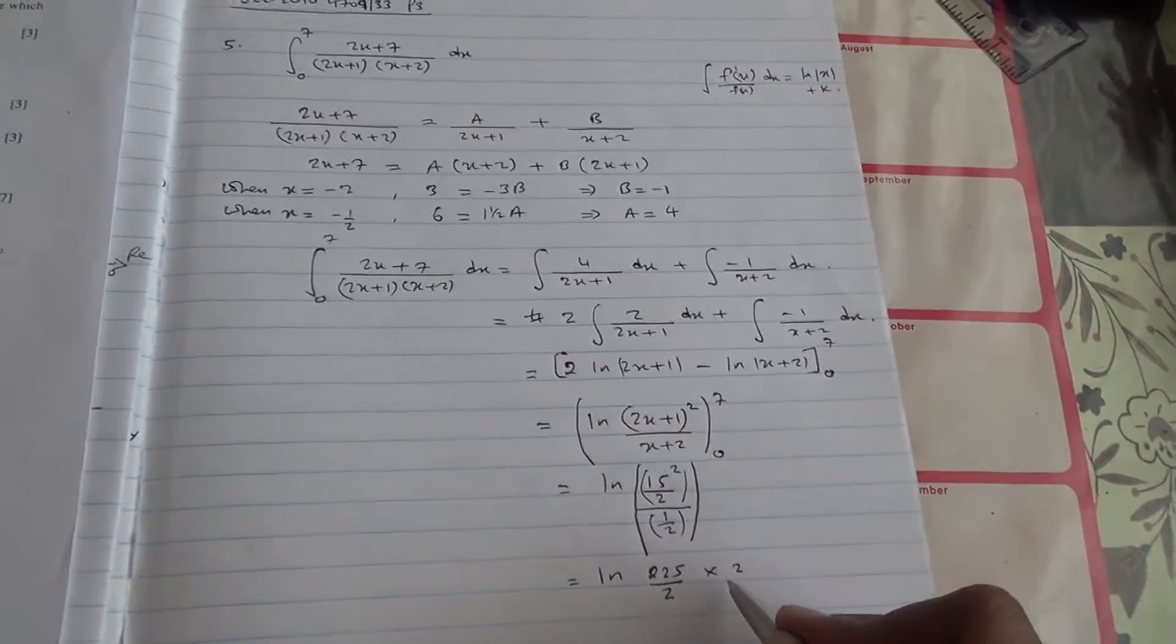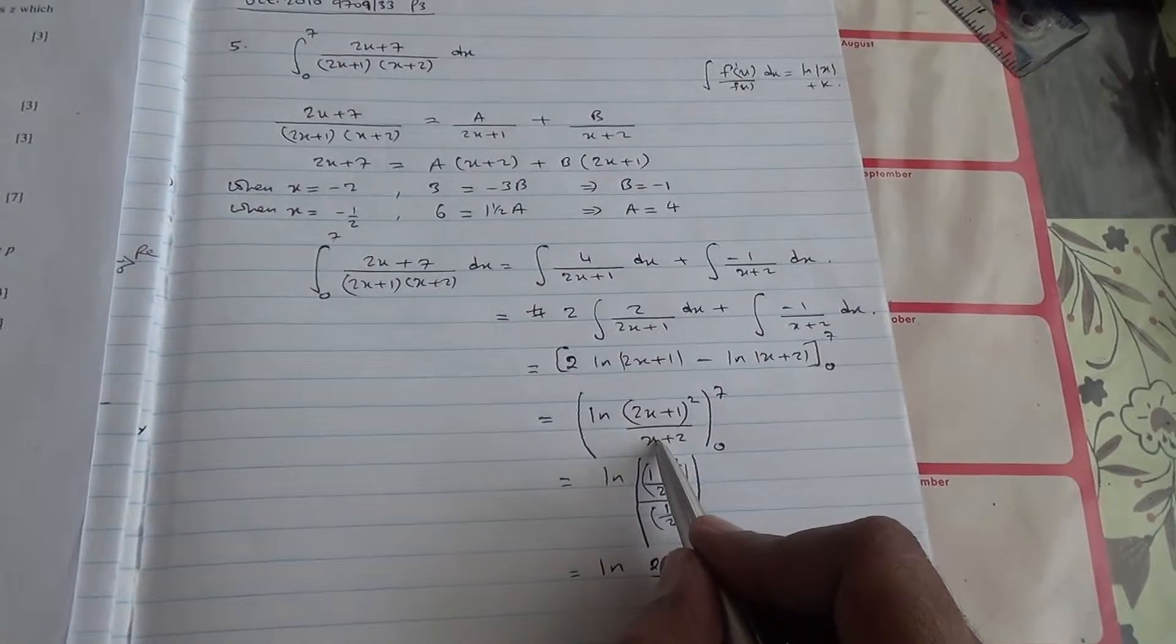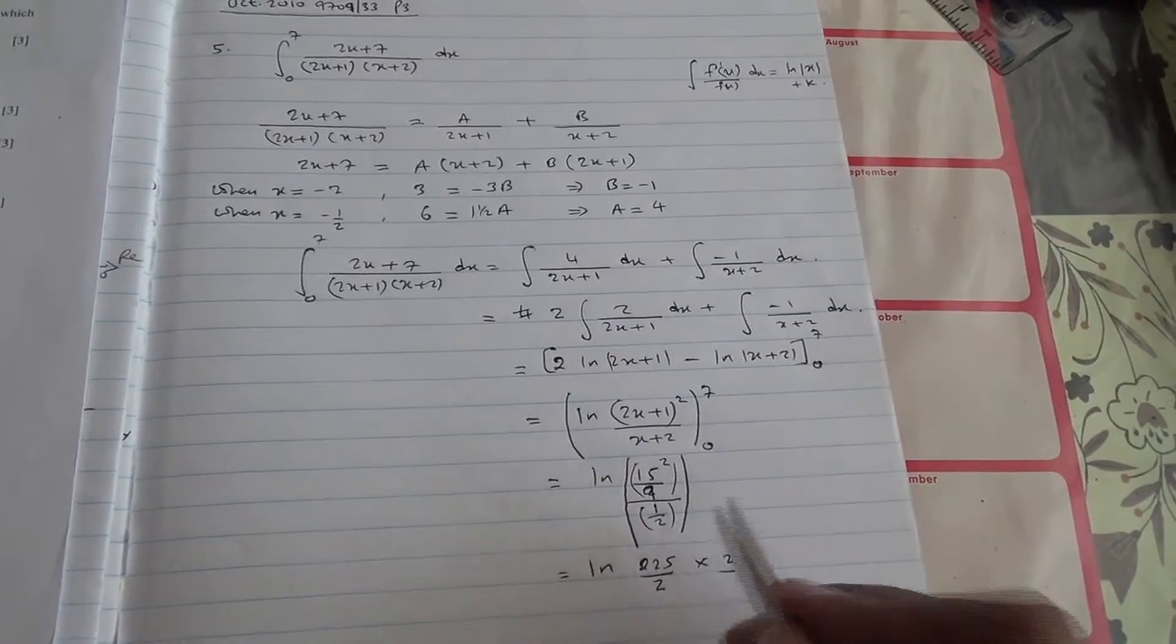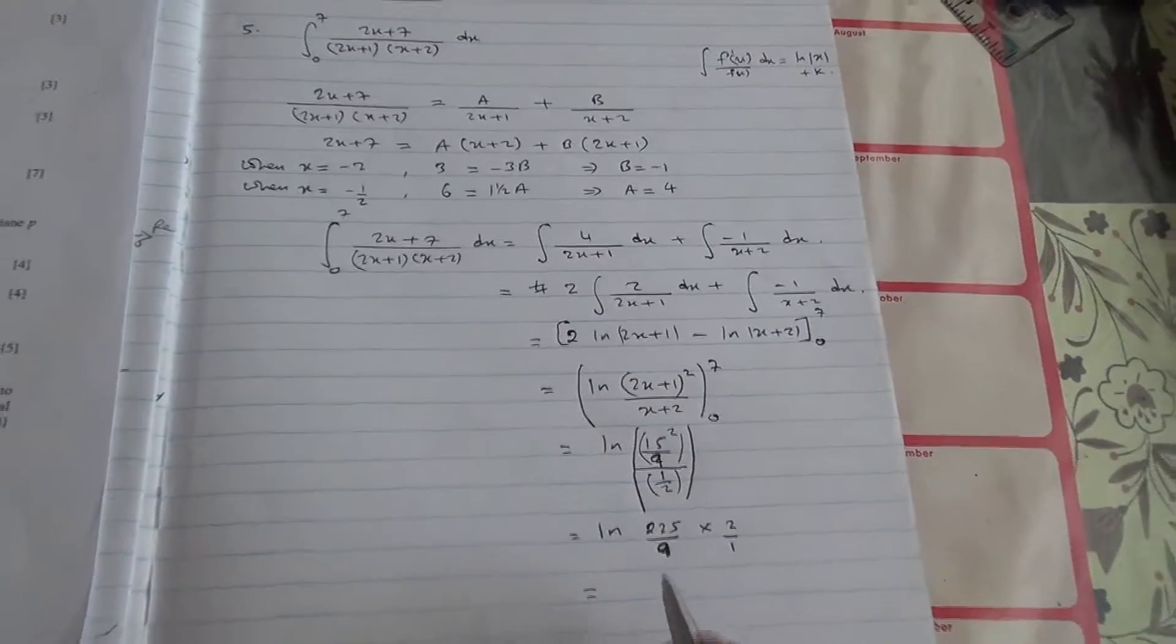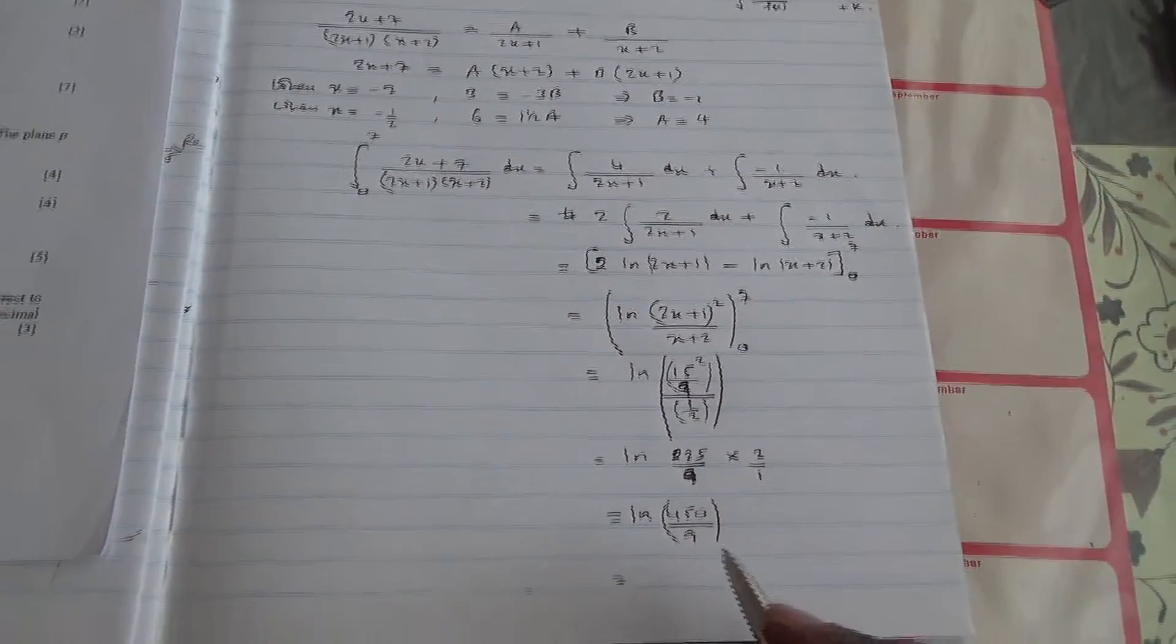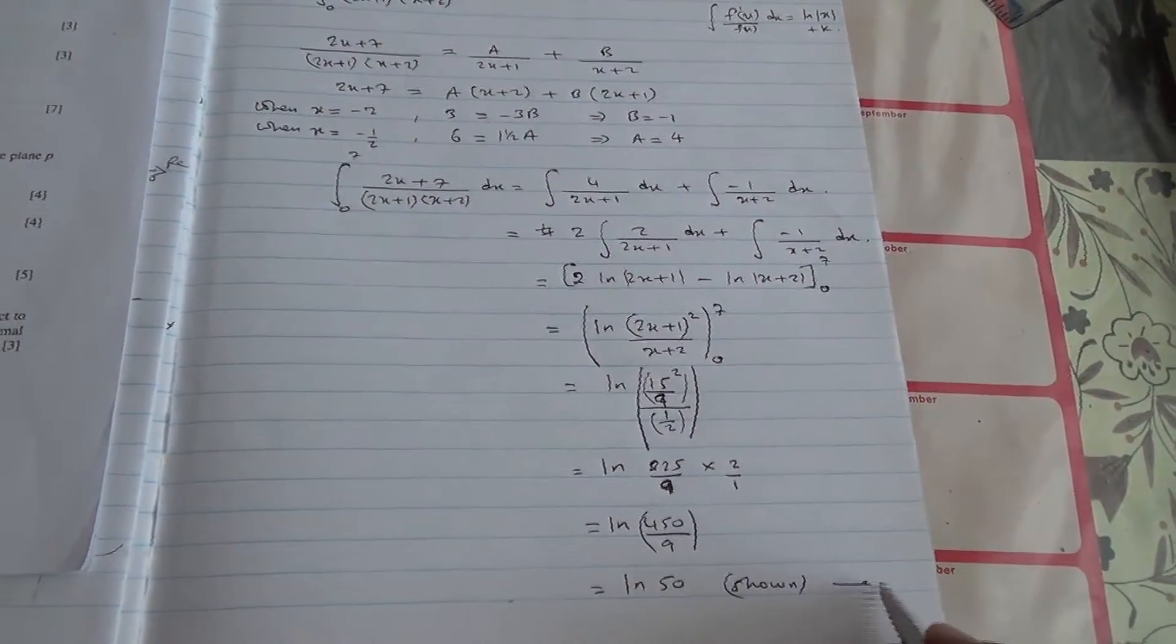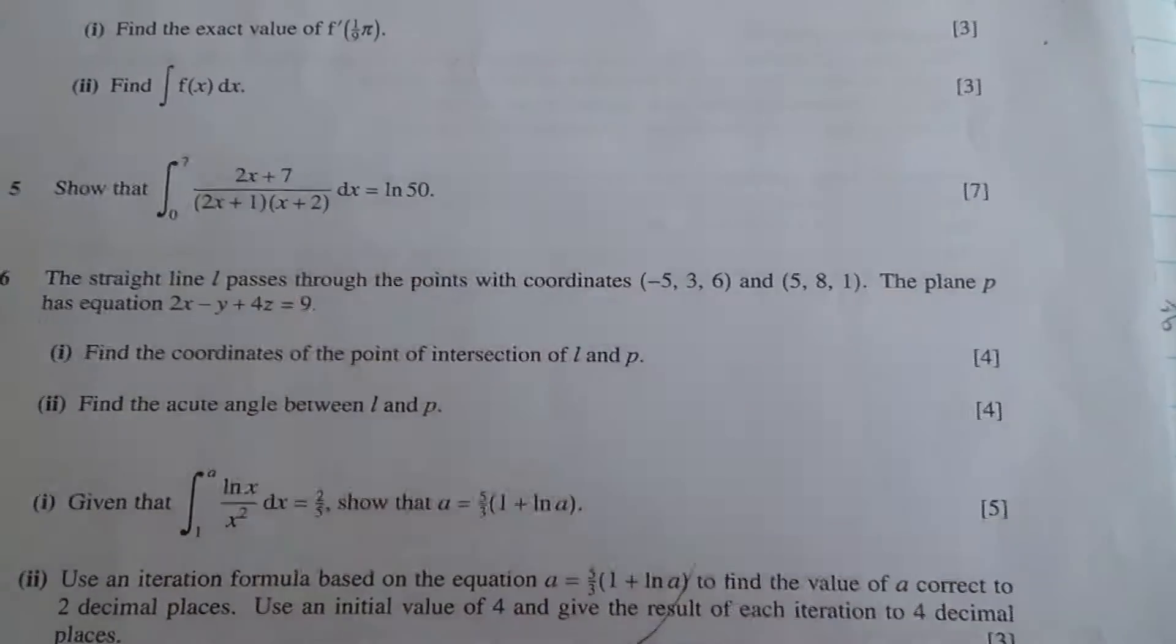Sorry, my mistake is 7, x here is 7, 7 plus 2 is 9, so it should have been 9, so I got 9, over 2. Then 225 times 2 is 450 divided by 9, and then you have ln 50. So here we are, shown, we were told to show that the integral will lead to ln 50 in the question.